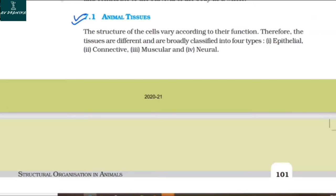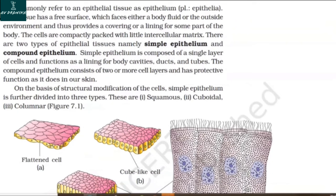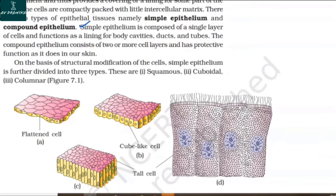7.1.1 Epithelial Tissue. We commonly refer to epithelial tissue as epithelium. This tissue has a free surface which faces either a body fluid or the outside environment, thus providing a covering or lining for some part of the body. The cells are compactly packed with little intercellular matrix. There are two types: simple epithelium, composed of a single layer of cells functioning as a lining for body cavities, ducts, and tubes; and compound epithelium, consisting of two or more cell layers with protective functions as in our skin.